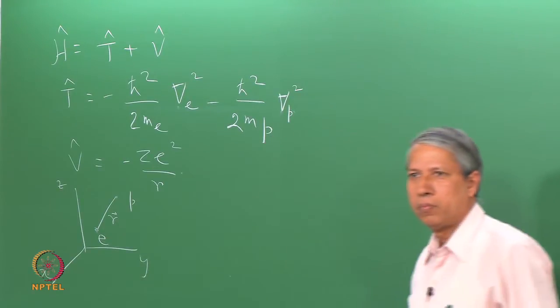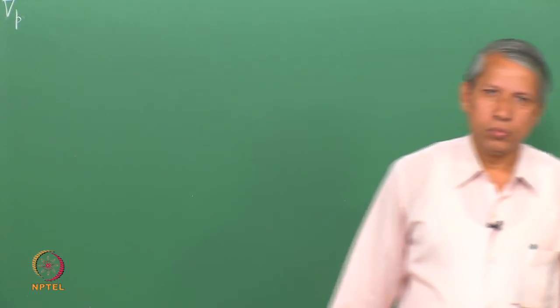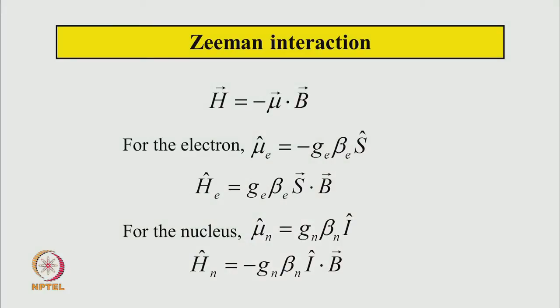What are the magnetic interactions that this atom has? If we put this hydrogen atom in a magnetic field, the interactions we can think of include the Zeeman interaction — the magnetic moment interacting with the magnetic field, giving the corresponding energy. For the electron, the magnetic moment comes from the spin angular momentum, and the Zeeman interaction operator is G_e β_e S·B.